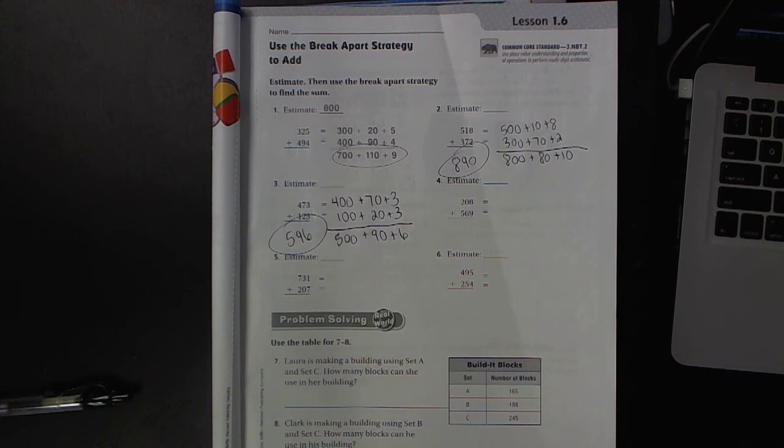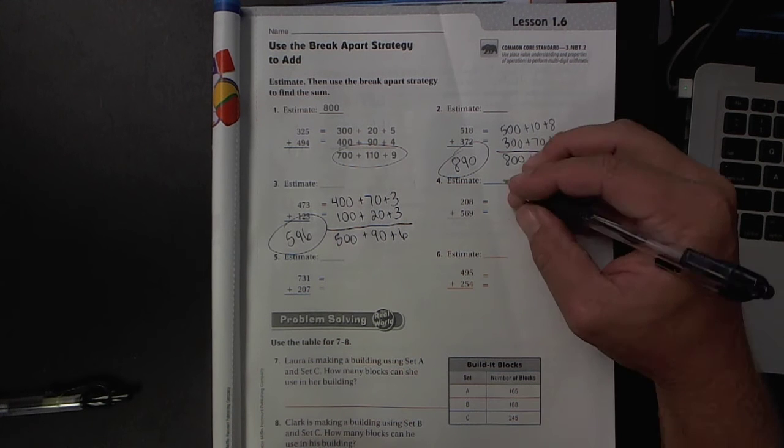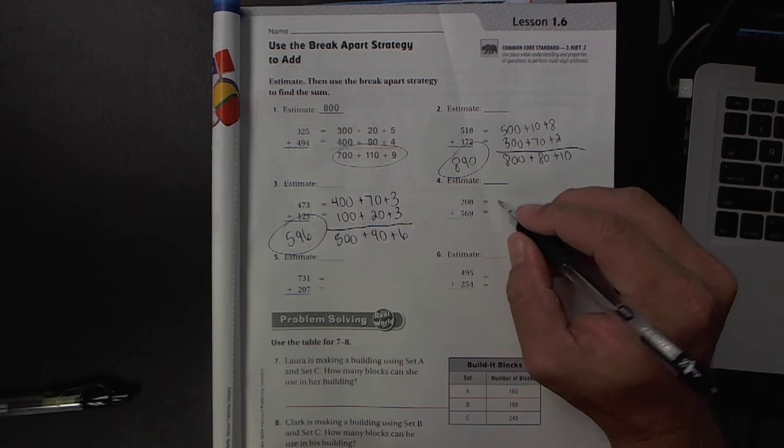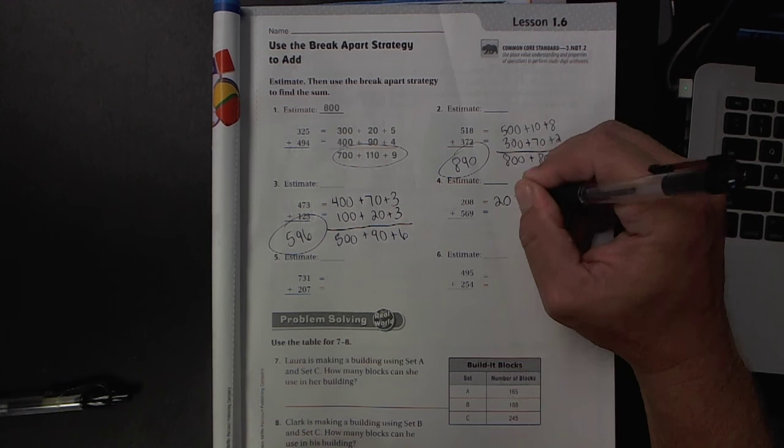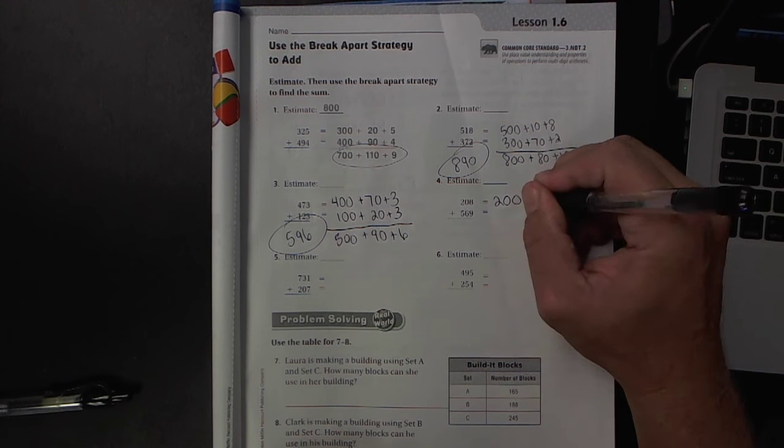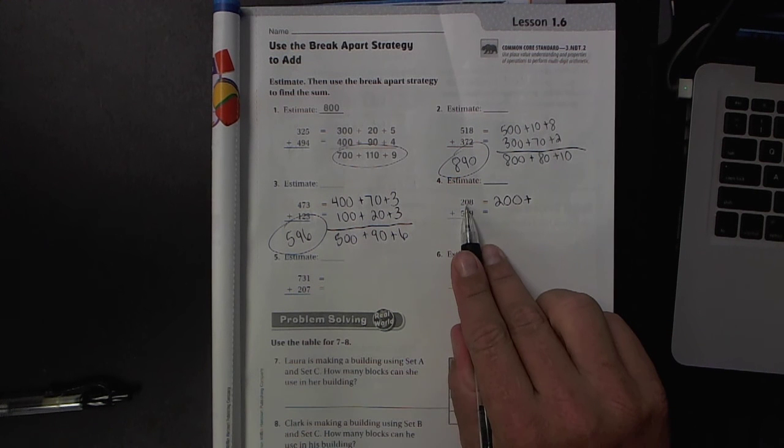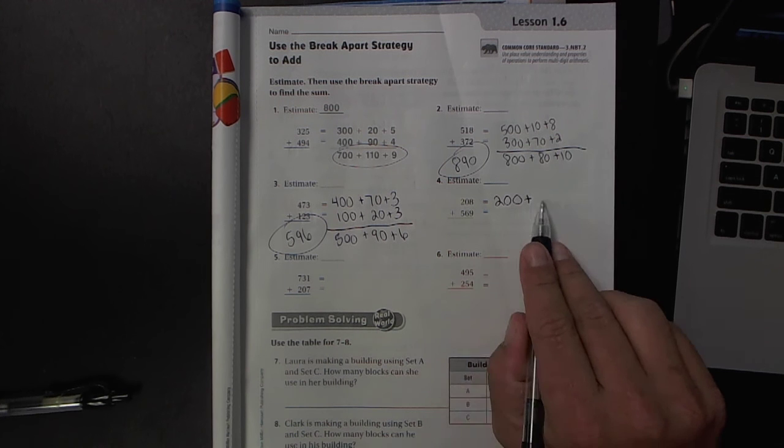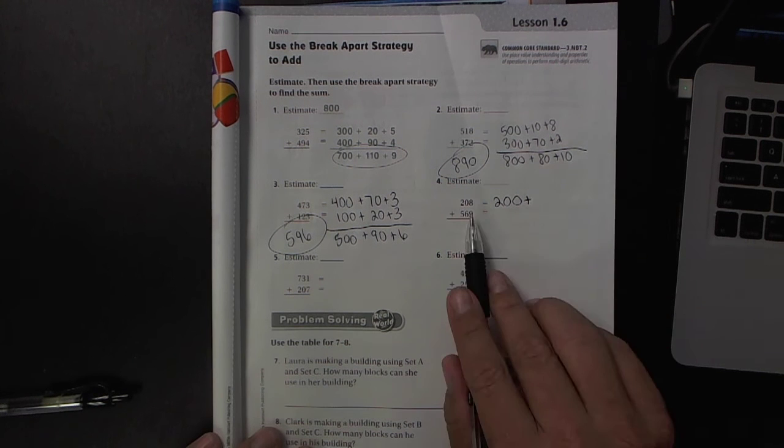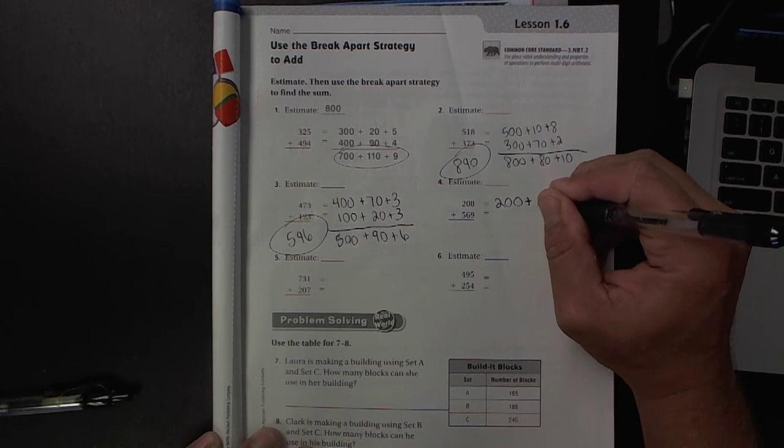I'll do one more example here. Number 4, the 2 is in the hundreds place, so it's worth 200. 200 plus, you can see there's a zero in the tens place, so you don't need to put anything. You don't need to say 200 plus zero. So we'll just do 200 plus 8.